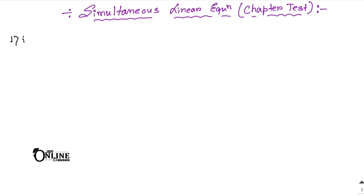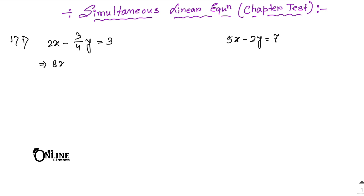Problem number 1: 2x minus 3/4 y equals 3, and 5x minus 2y equals 7. First, multiply 4 with each and every term. So it becomes 8x minus 3y equals 12. Now we can easily solve these two equations.